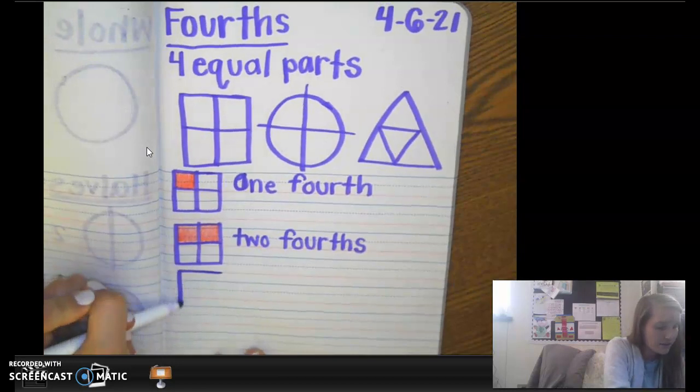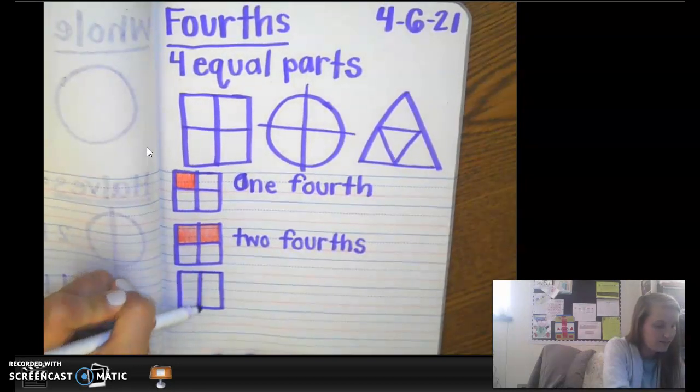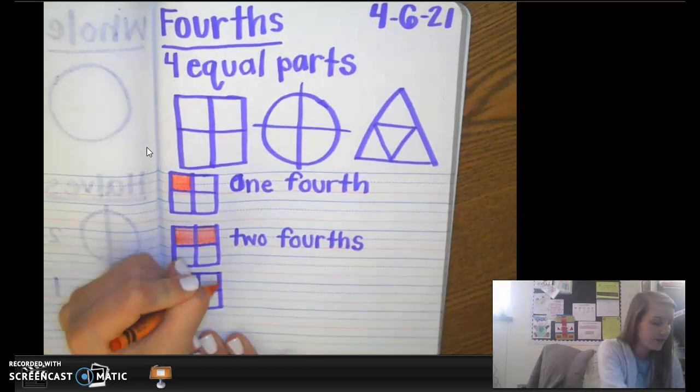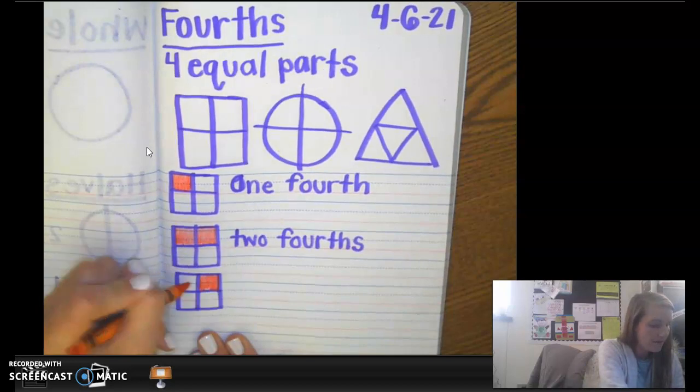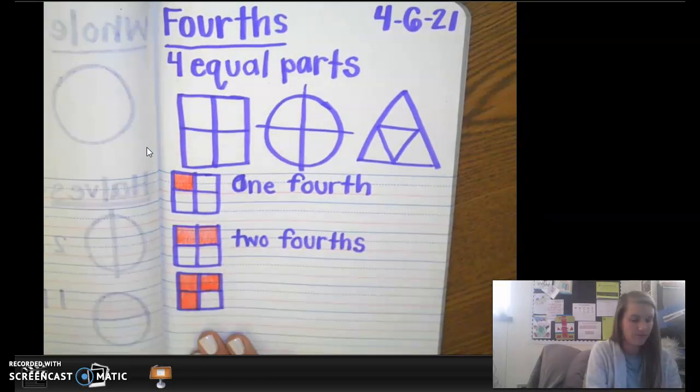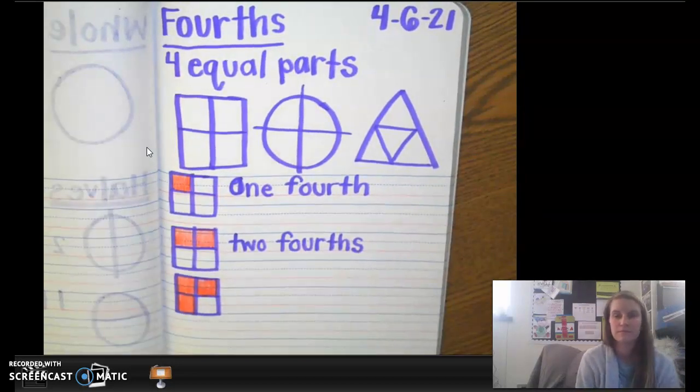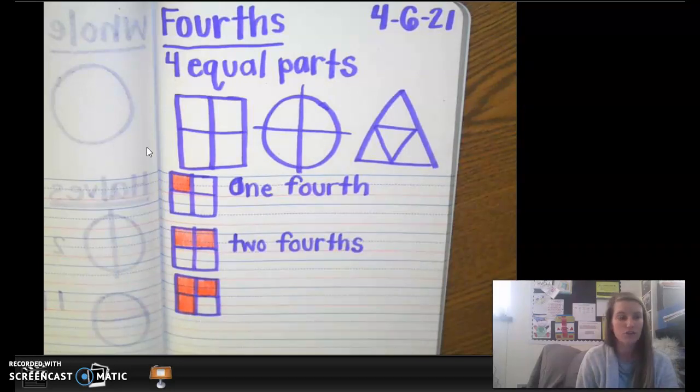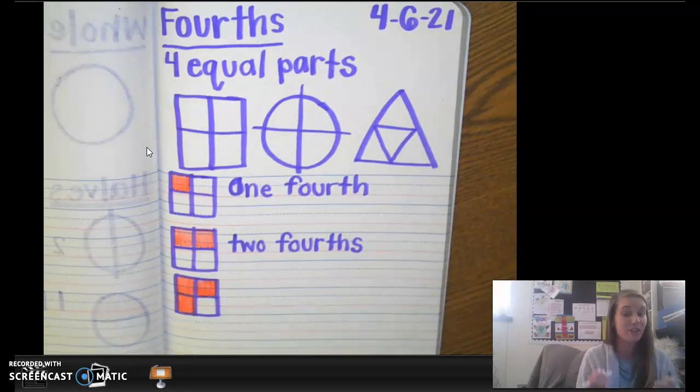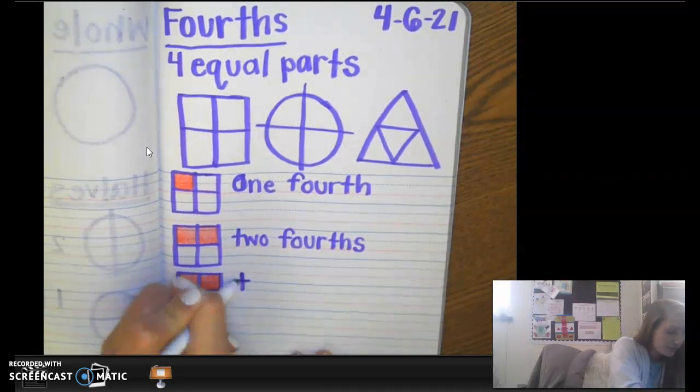Let's draw another square. You guys are doing a great job. Partition it into four equal parts. And now, I want you to color in three of the squares. One, two, three. How would I describe this fraction? How many parts are colored in? Three-fourths. If you said three-fourths, you are correct. Three-fourths.